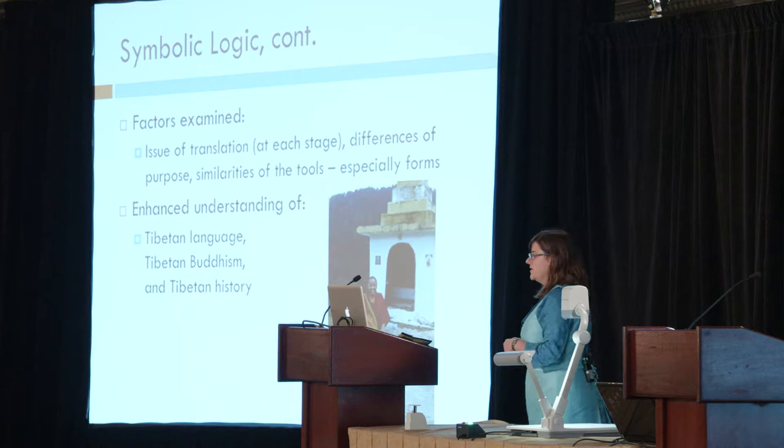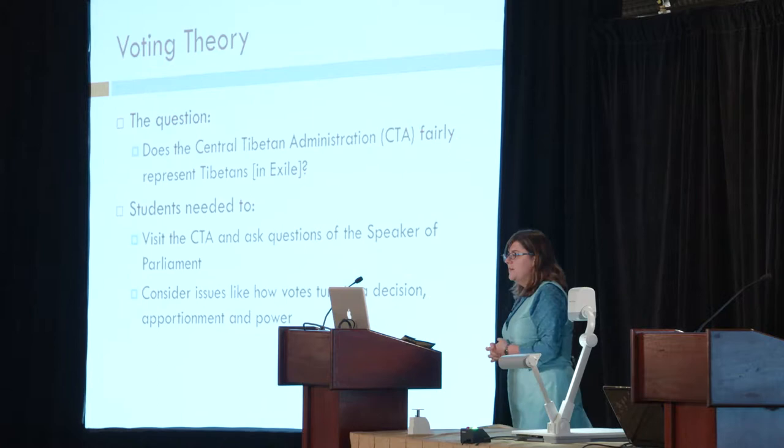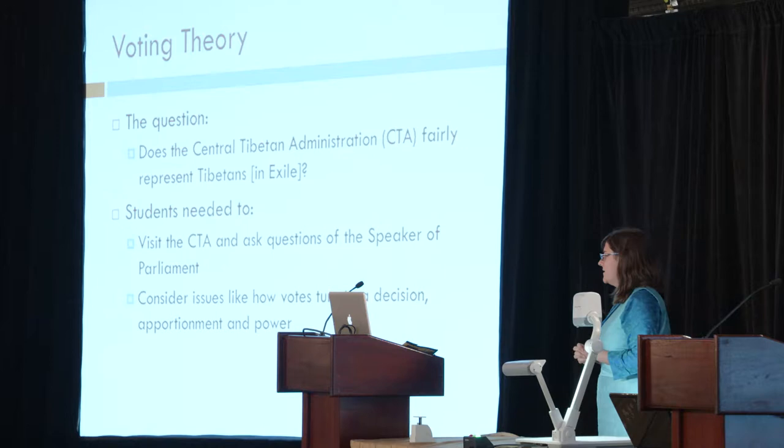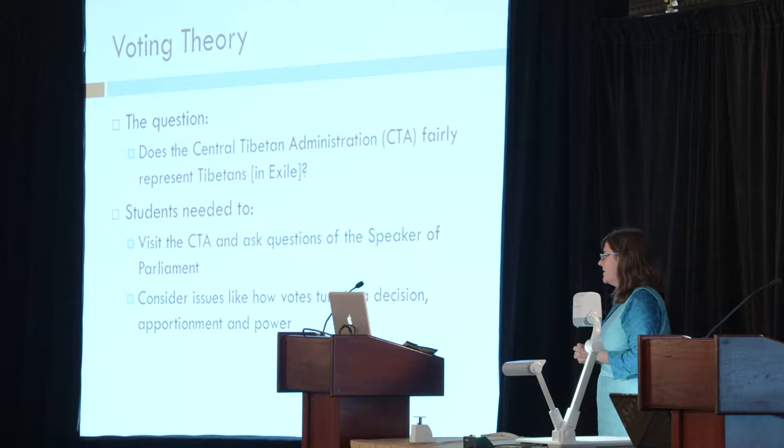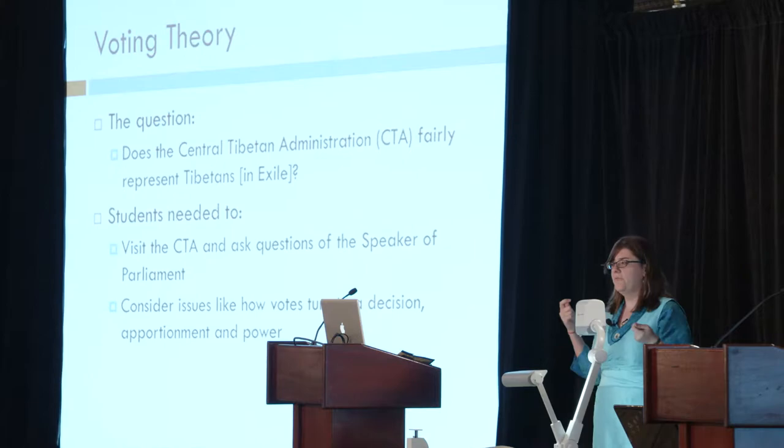The next unit looked at the newly formed democracy — now that the Dalai Lama no longer has a secular role — called the Central Tibetan Authority, the CTA. Students had to answer the question: does the CTA represent the people fairly in exile? We were looking at voting theory, and they asked questions of the Speaker of Parliament, considering issues of apportionment and power in exile. They examined the distribution of the population both in Tibet and in exile, the role of religion in that culture, and the religious sects of Tibet, because both of those factors are tied to votes.